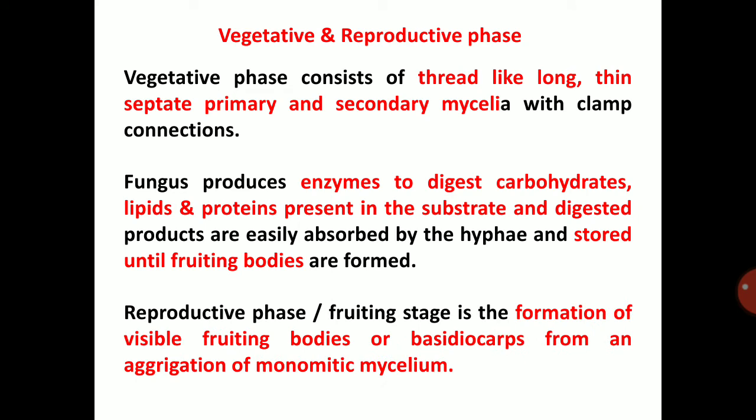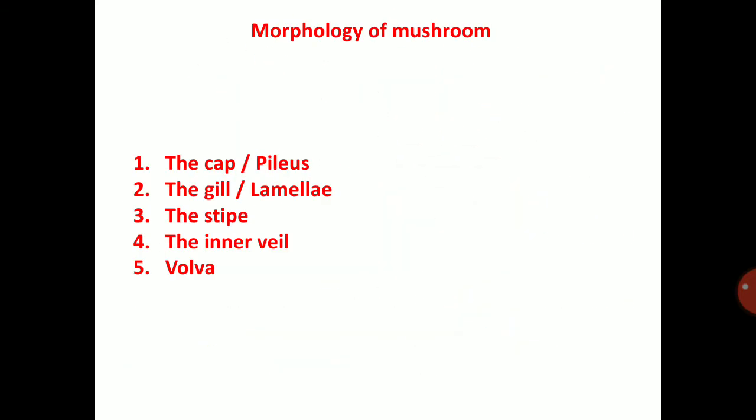The reproductive phase or fruiting stage is the formation of visible fruiting bodies, called basidiocarps, from an aggregation of monokaryotic mycelium. When mycelium aggregates, fruiting bodies are formed.